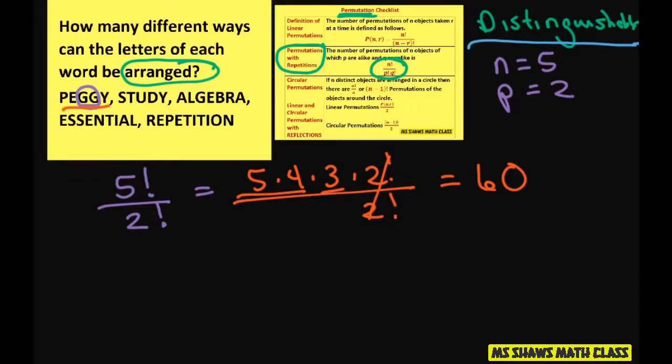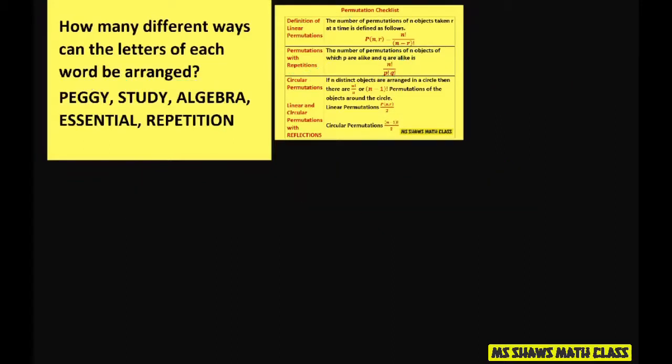Alright, the next one is study. So for study, we have five letters and none of the letters repeat. So it's just five factorial and that's going to be one hundred and twenty.